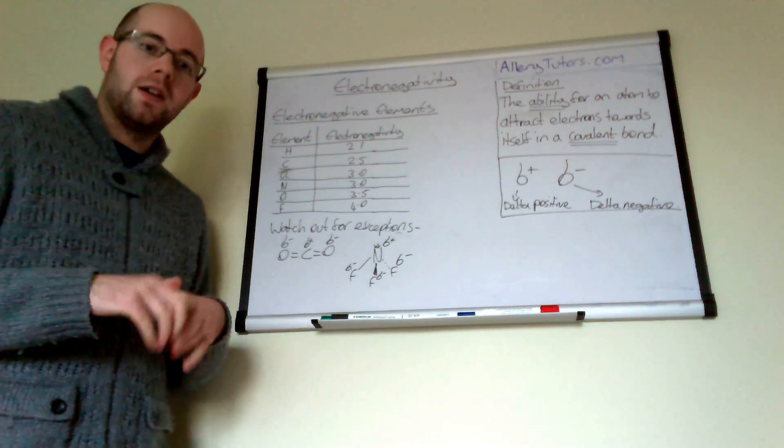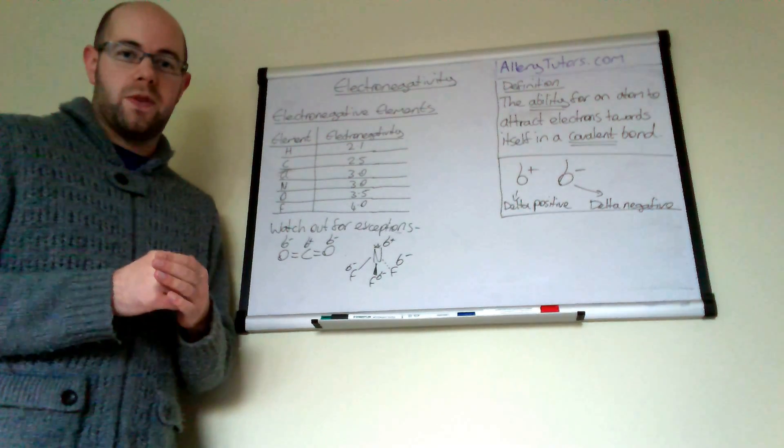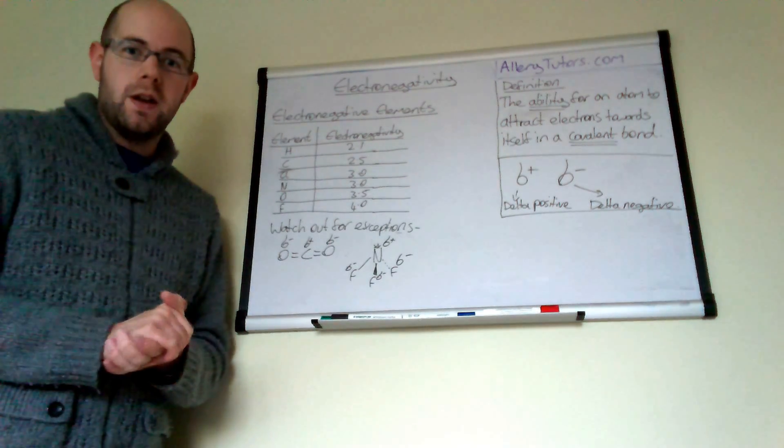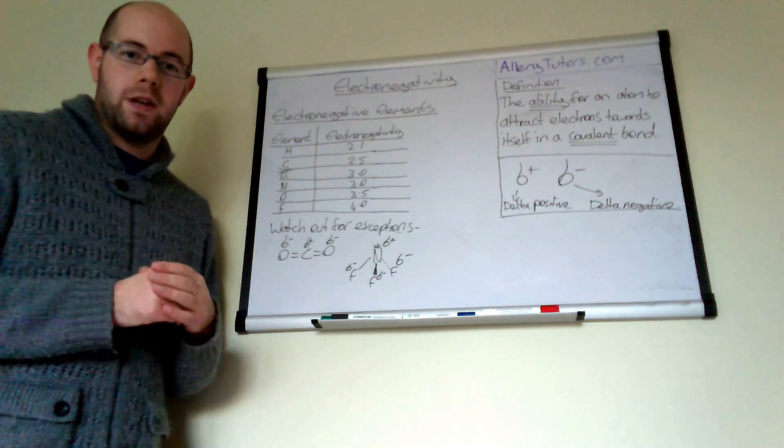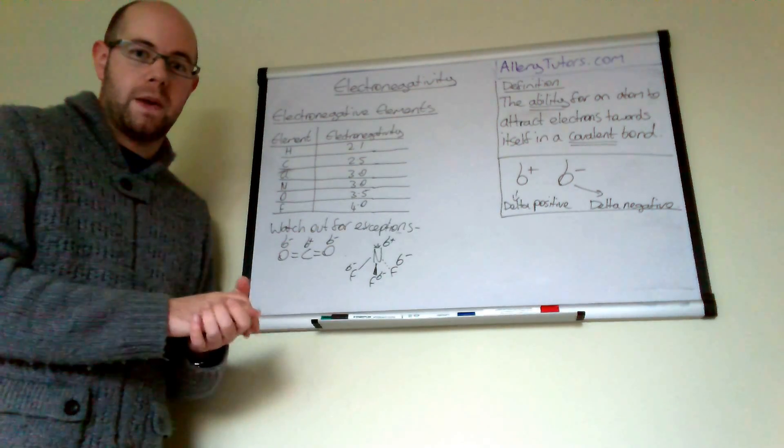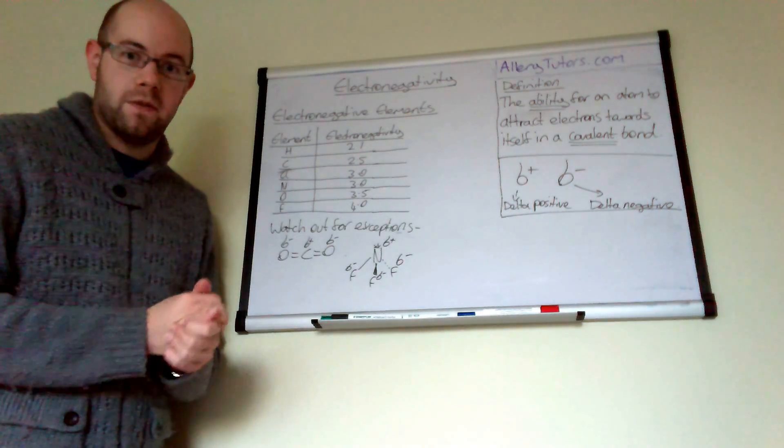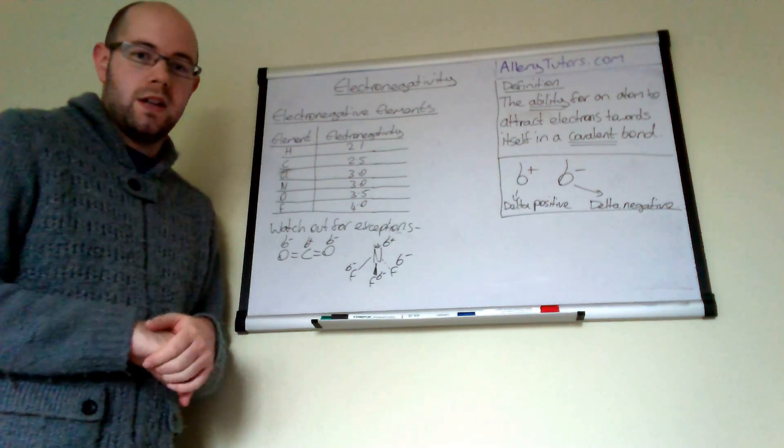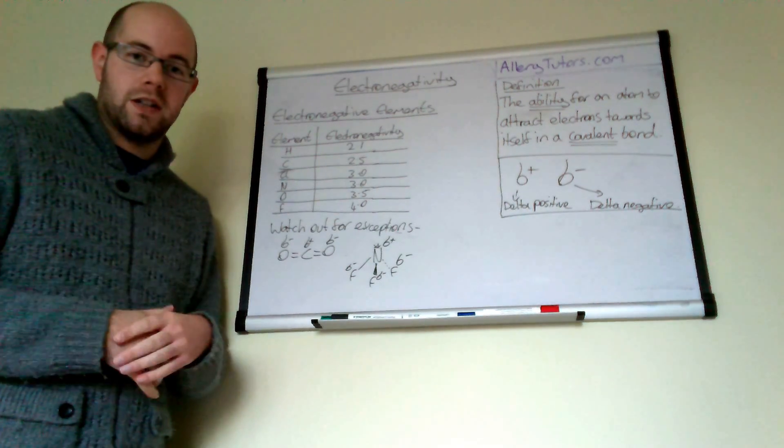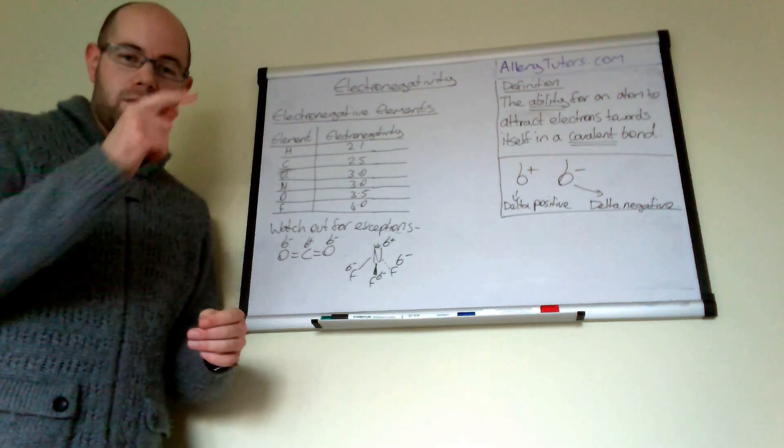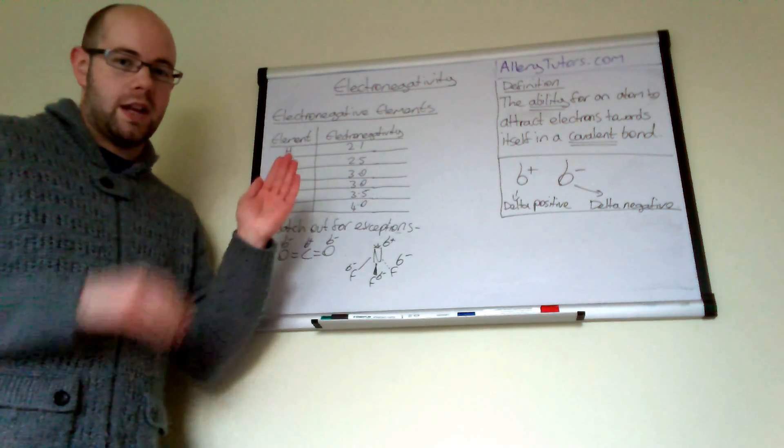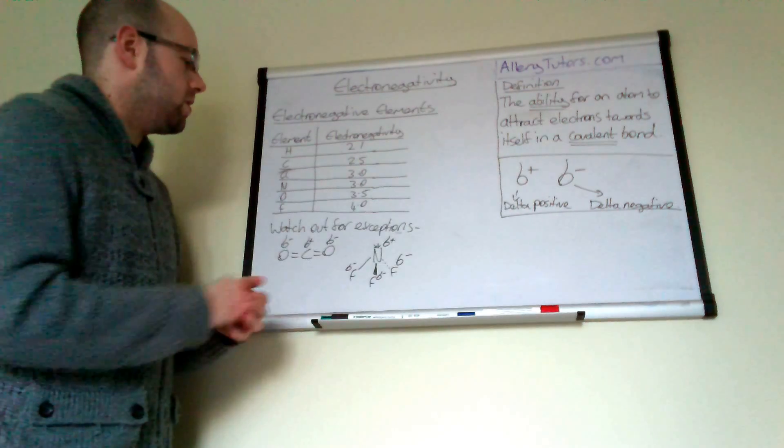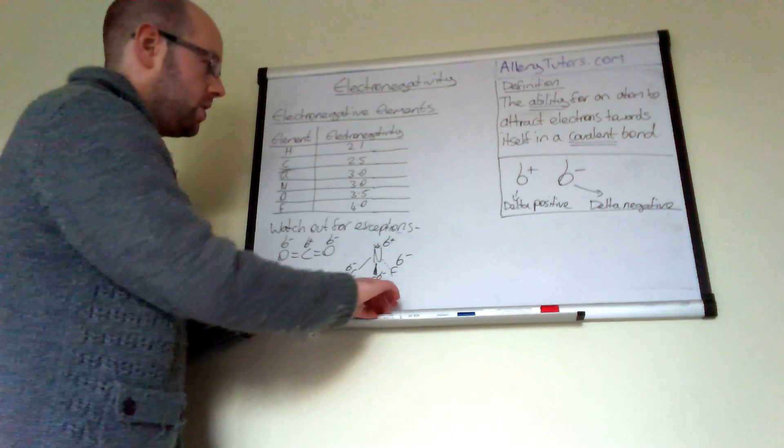If you visualize this in a periodic table, you'll find that the further right and up you go, the more electronegative the element is—excluding Group 8 or Group 0. In this case, the furthest up and right is fluorine, which is the most electronegative. The further away you go from fluorine, either to the left or down, the less electronegative your element becomes.